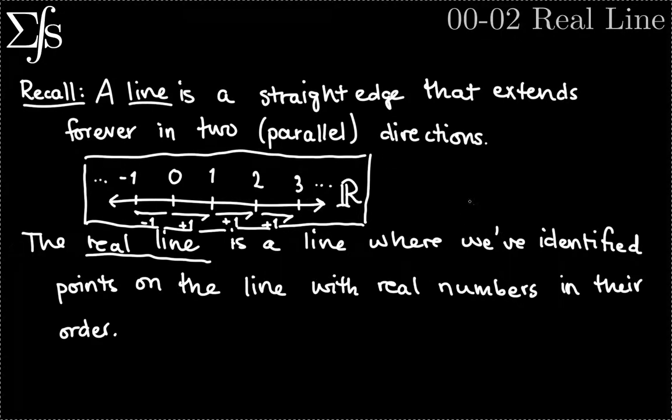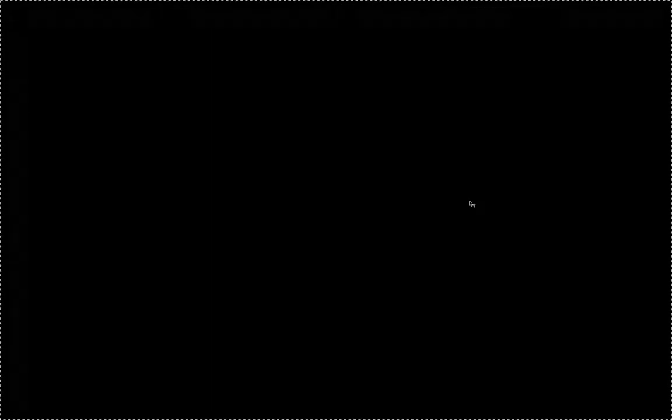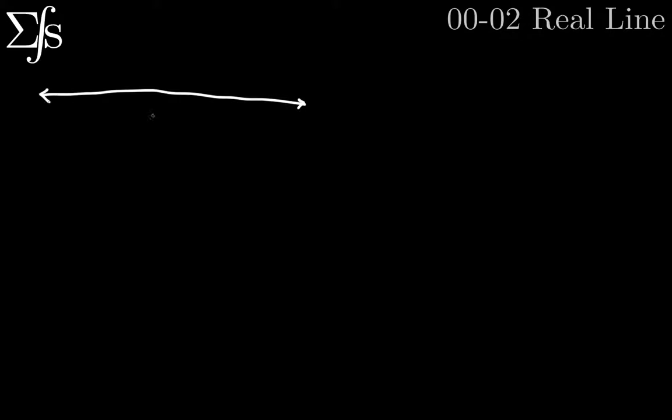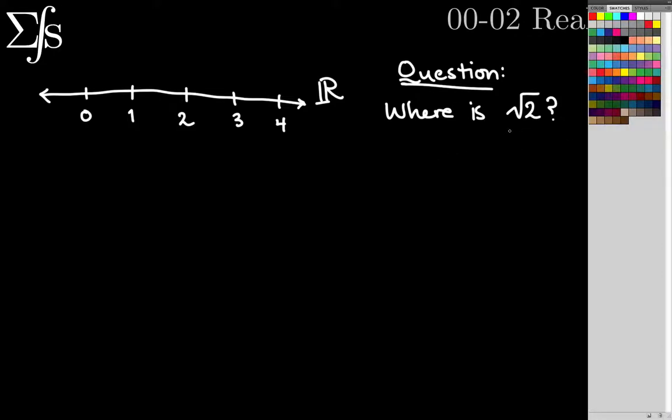So let's look at not really some examples since the real number line is a sort of unique entity. We can think about where numbers fall on this line. So let's say 0, 1, 2, 3, and 4. Let's just take that for our example here. So question, where is the square root of 2?